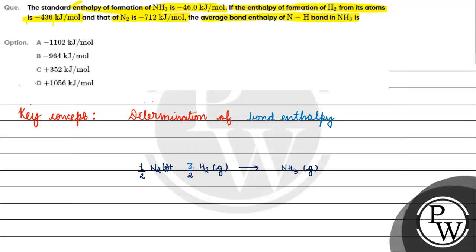If we write the standard enthalpy of formation of ammonia, what we have is: ΔHf = (3/2) × bond enthalpy of H-H + (½) × bond enthalpy of N≡N minus 3 × bond enthalpy of N-H bond.